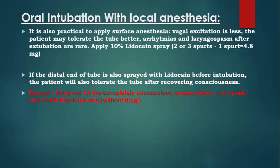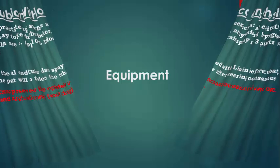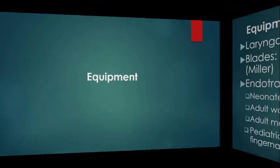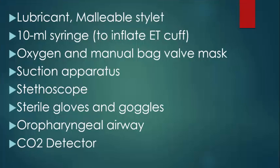For oral intubation with local anesthetic, apply 10% lidocaine spray 2 or 3 times. Equipment for endotracheal intubation includes: laryngoscope blades, endotracheal tubes of various sizes, lubricant, malleable stylet, 10mm syringe, oxygen, suction apparatus, stethoscope, sterile gloves and goggles, oropharyngeal airway, and CO2 detector.